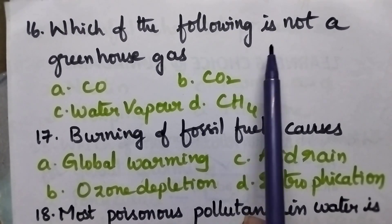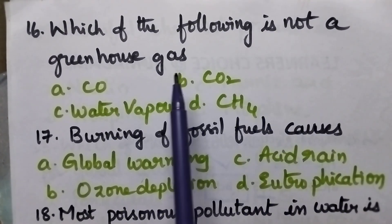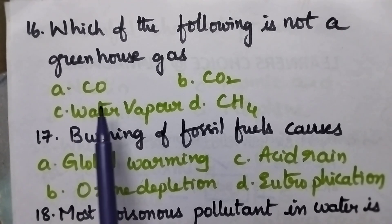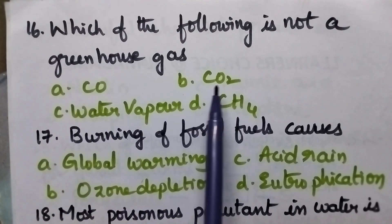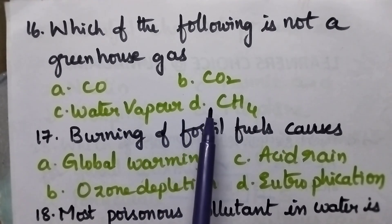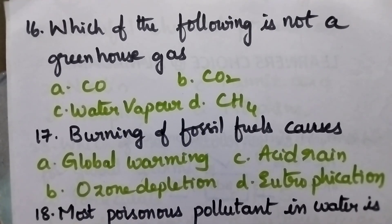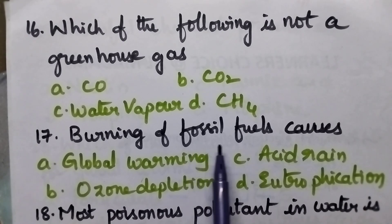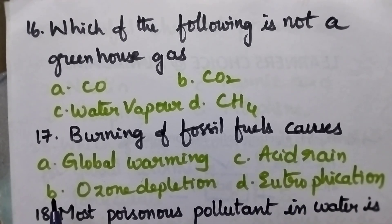Which of the following is not a greenhouse gas? A: Carbon monoxide, B: Carbon dioxide, C: Water vapour, D: Methane.